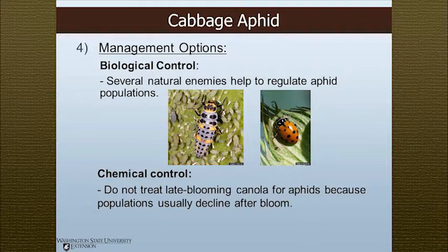Management options for cabbage aphid include biological control — using the pest's natural enemies to control the insect. One particular biocontrol for aphids is the ladybird beetle, or ladybug. These guys can consume up to 5,000 aphids in their lifetime, making them an excellent predator. Chemically, there are several options — consult the Pacific Northwest Insect Management Handbook, as there are some new chemicals for 2013 in that guide. It is recommended not to treat late-blooming canola because aphid populations usually decline after bloom — it would be a waste of time and money.